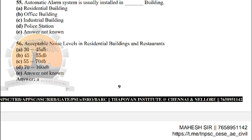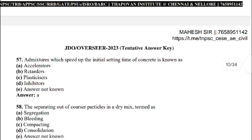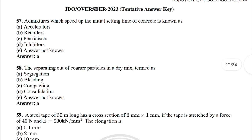Next: acceptable noise levels in residential buildings and restaurants — the correct answer is: 30 to 45 decibels. Next: an admixture which speeds up the initial setting time of the concrete is known as — the correct answer is option A: accelerators.